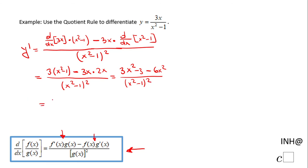And then we have to simplify the numerator, and we have negative 3x squared minus 3 over x squared minus 1 squared, and that will be y prime.